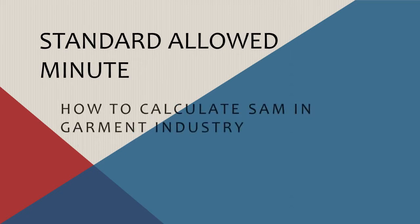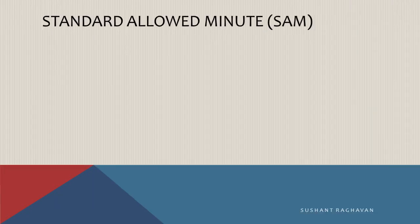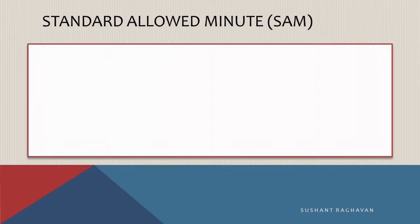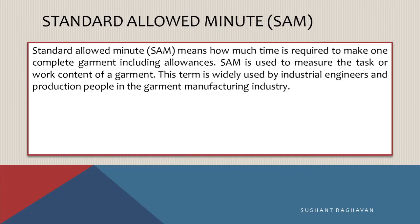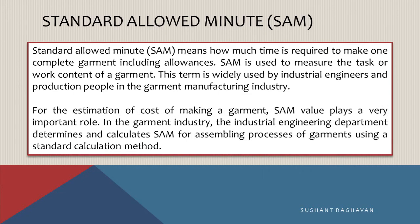Standard Allowed Minute — how to calculate SAM in the garment industry. SAM means how much time is required to make one complete garment including allowances. SAM is used to measure the task or work content of a garment. This term is widely used by industrial engineers and production people in the garment manufacturing industry. For the estimation of cost of making a garment, SAM value plays a very important role.